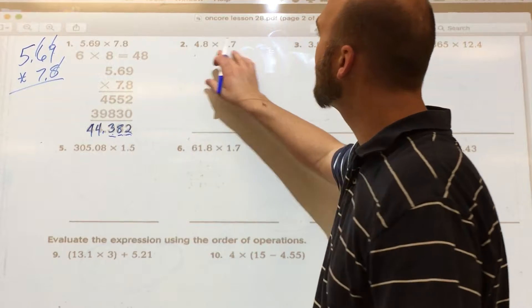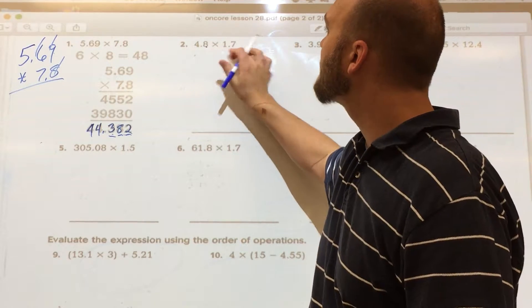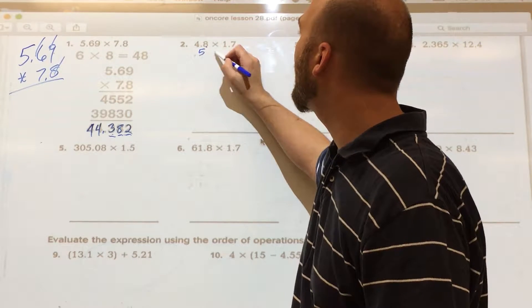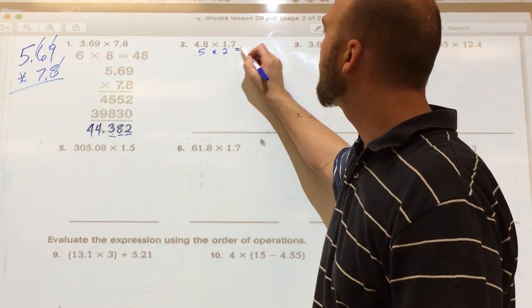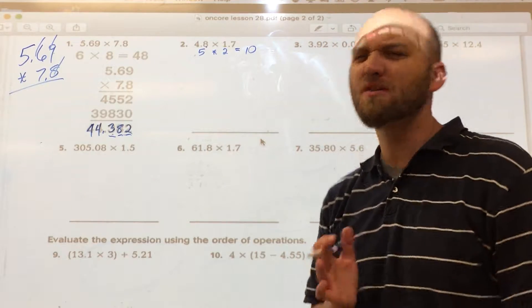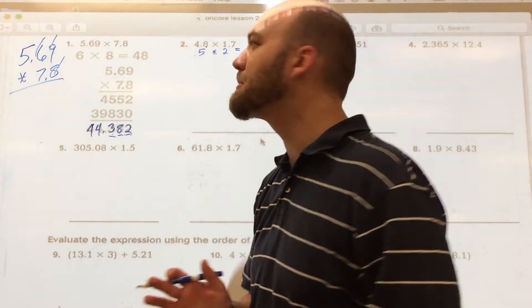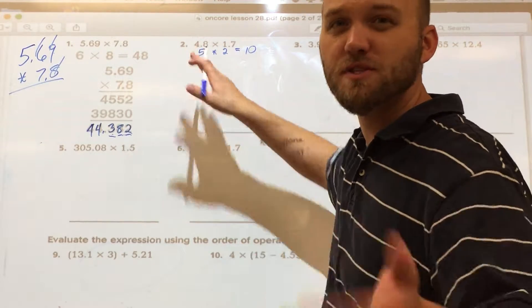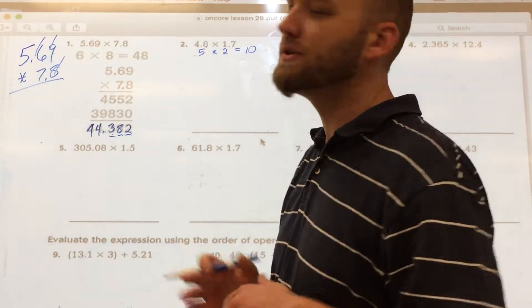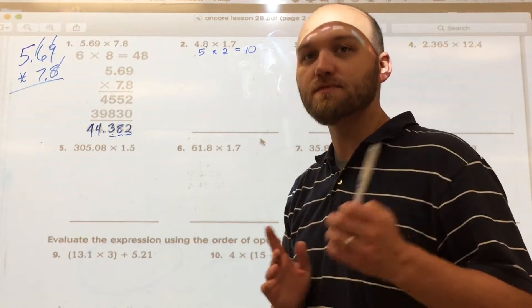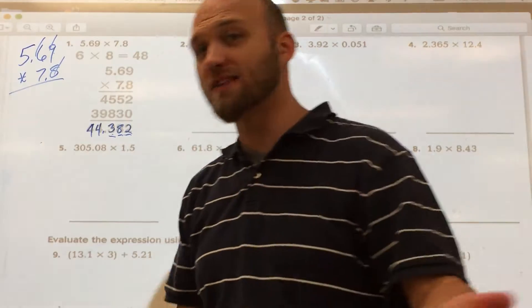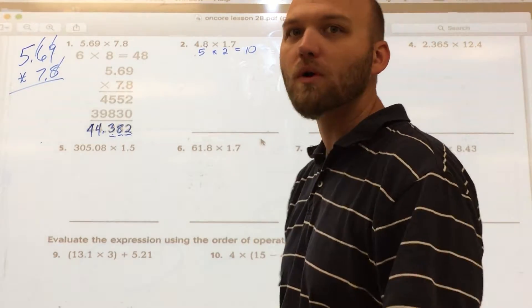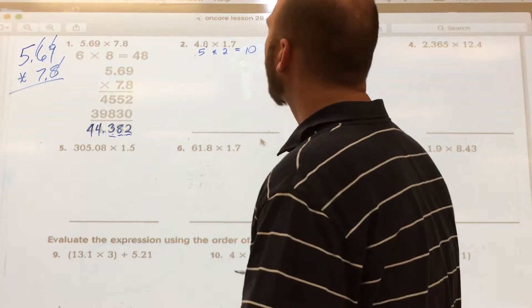So if I have my estimation here, if I have 4.8 times 1.7. Well, 4.8 is very close to 5. 1.7 is close to 2. Therefore, I know my answer is going to be somewhere around 10. But I'm dealing with decimals, so it's probably going to be, in this case, both of these numbers are lower than what I average, so it's going to be a little less than 10. But if I'm somewhere around 10, that's good. That's important because if I don't know where to put my decimal, and I end up with an answer that has in the hundreds, or an answer that's like 2.49 or something like that, I know I'm way off. I have to redo the problem.